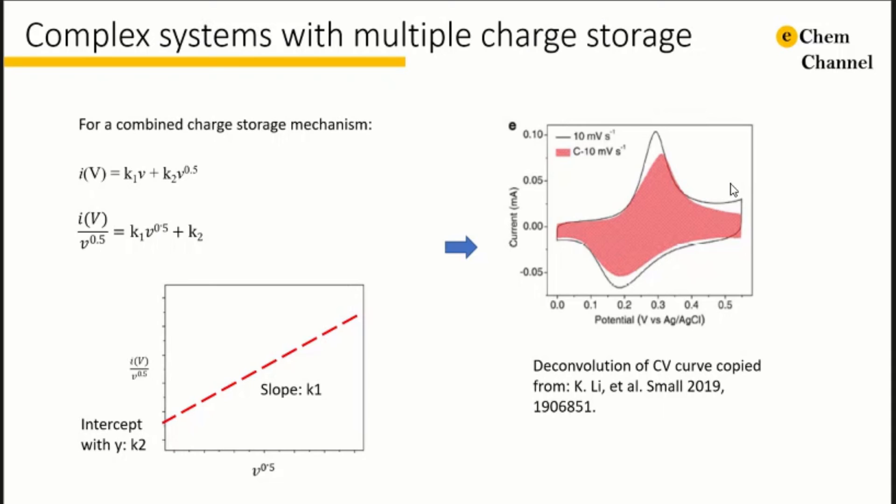For a specific CV curve, the value of k1 and k2 is different at different potential on the cathodic and anodic branch. So if we would like to obtain the contribution of each mechanism for a complete CV curve, we have to get as many values of k1 and k2 as we can at different potential on both cathodic and anodic branch.